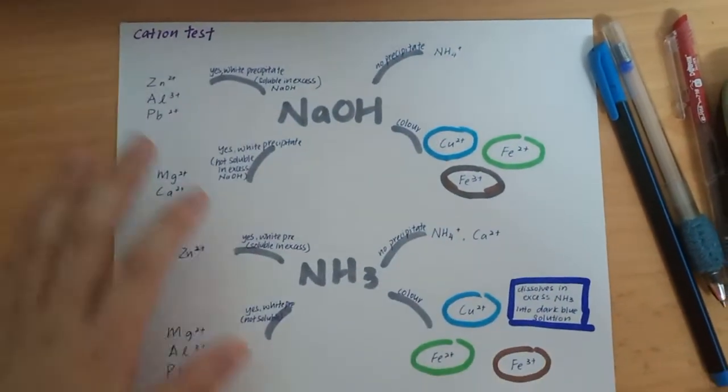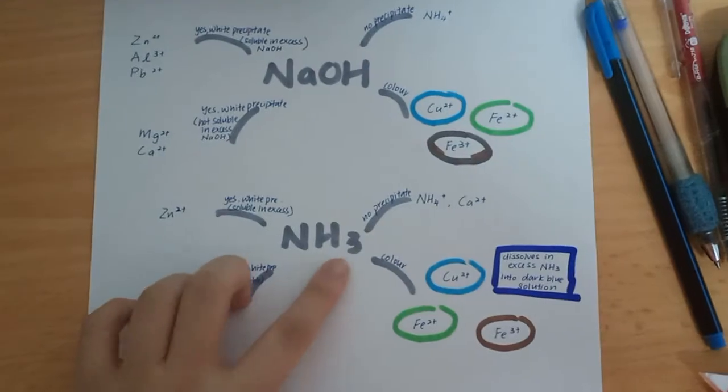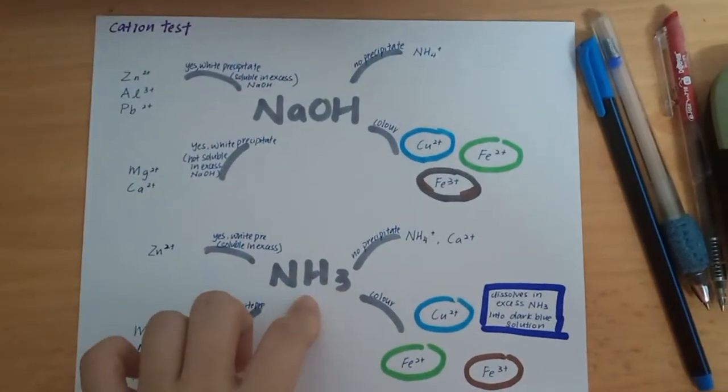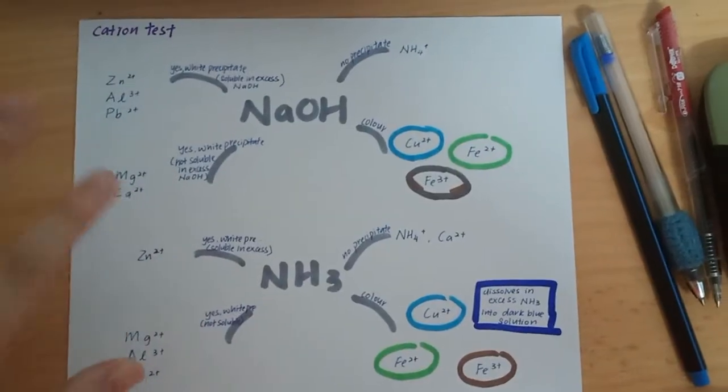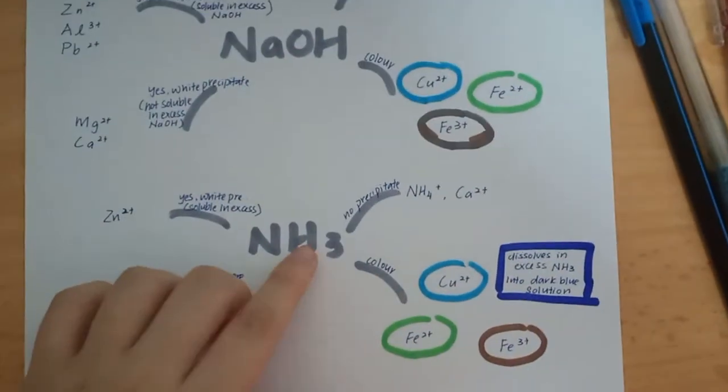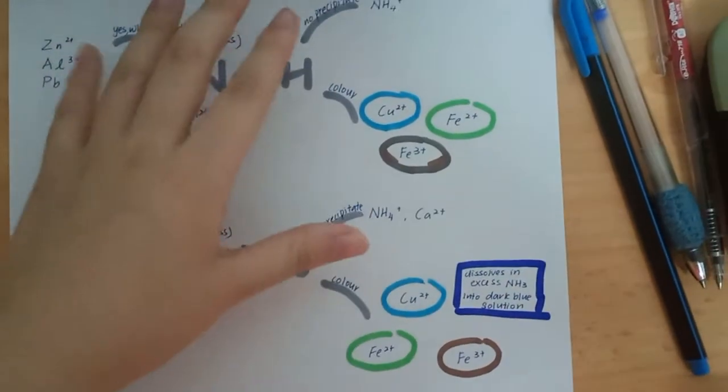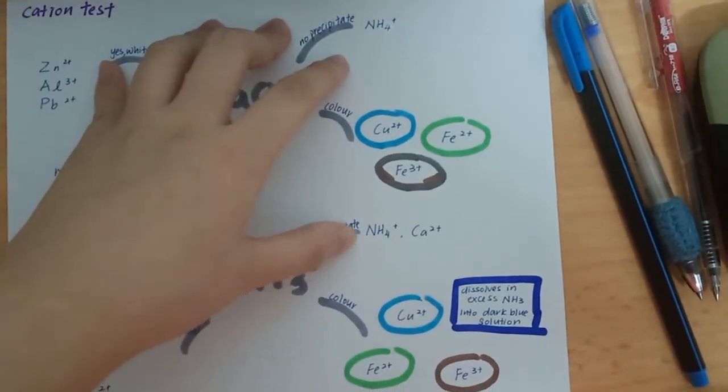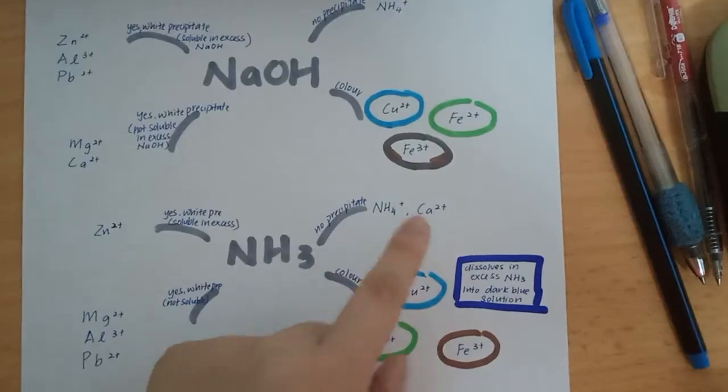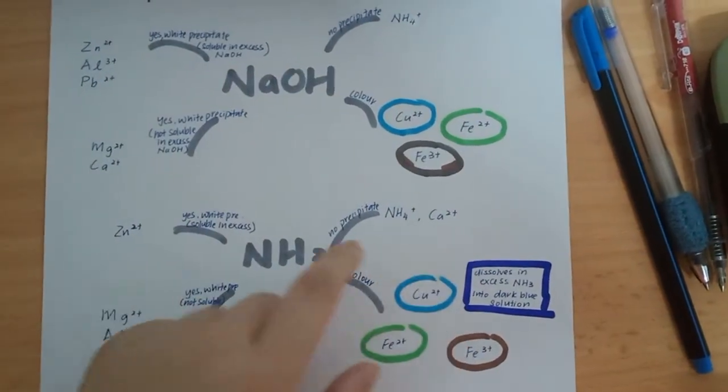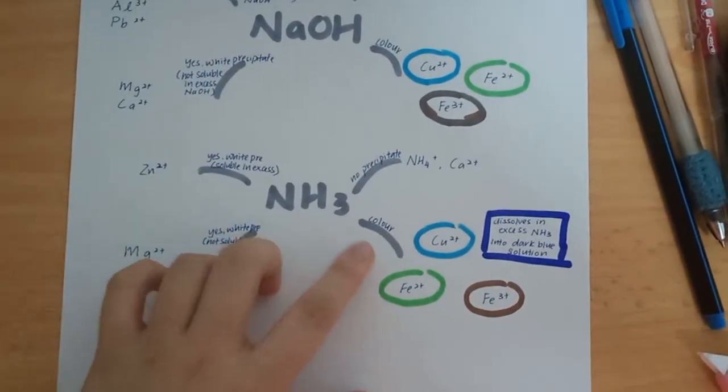When you know how to draw this, it's actually easy for you to draw the next one which is the NH3 ammonia. It's very similar, just a few twists here and there. We just draw no precipitate same as before. NH4+ does not form any precipitate at the same time. You can see it's the Ca2+.